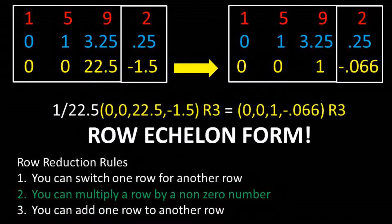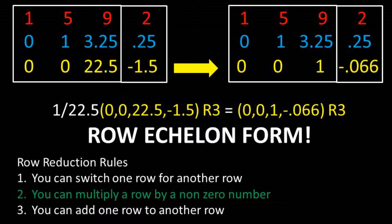Now we need to get a 1 in row 3, column 3. We can do this by multiplying row 3 times 1 over 22.5. We have officially reached row echelon form.